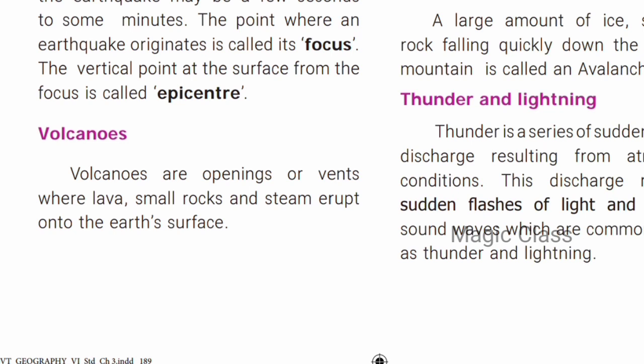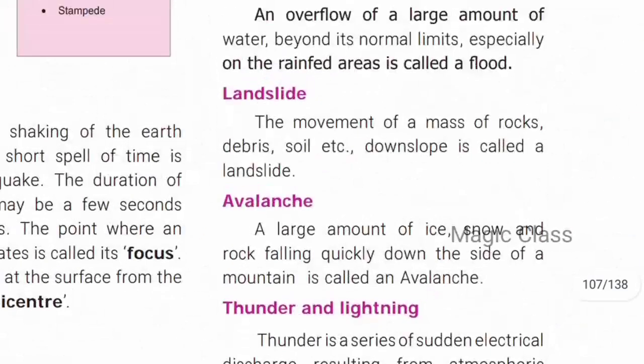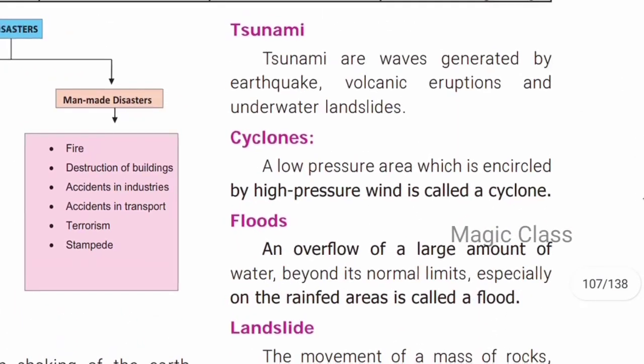Volcanic eruptions involve small stones and steam erupting. The volcanic eruptions spread all over because the heat is very intense. Next is tsunami. A tsunami is a wave generated by earthquakes, volcanic eruptions, and underwater landslides.